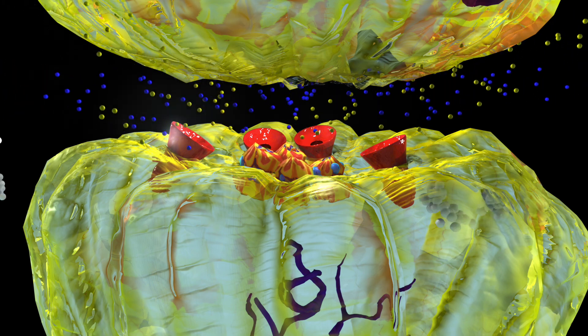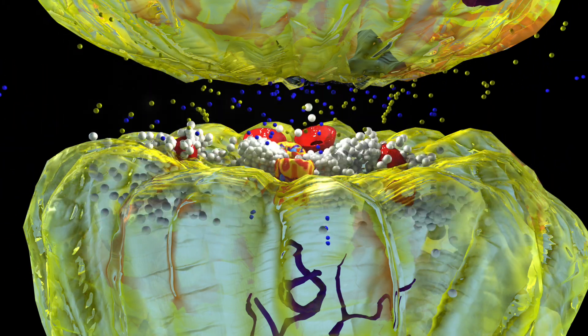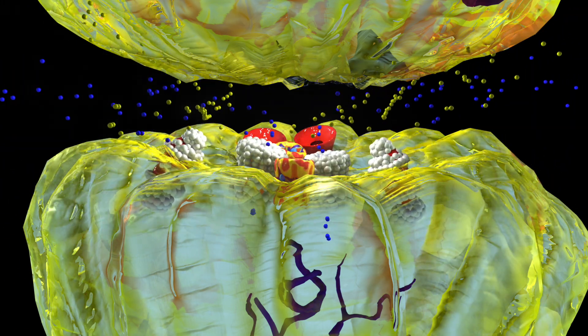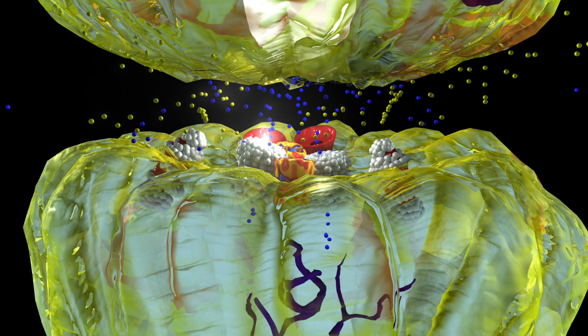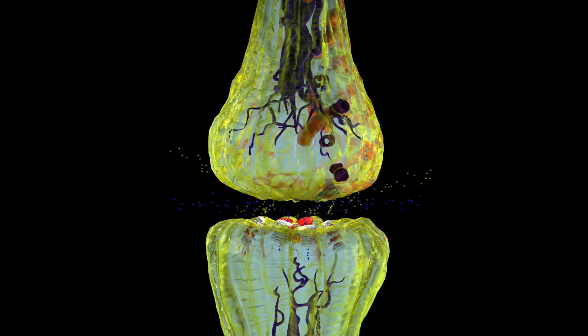Topiramate binds to and closes the sodium channel. This stops sodium from passing through. With less of this positively charged ion entering, the electrical signal is stopped.